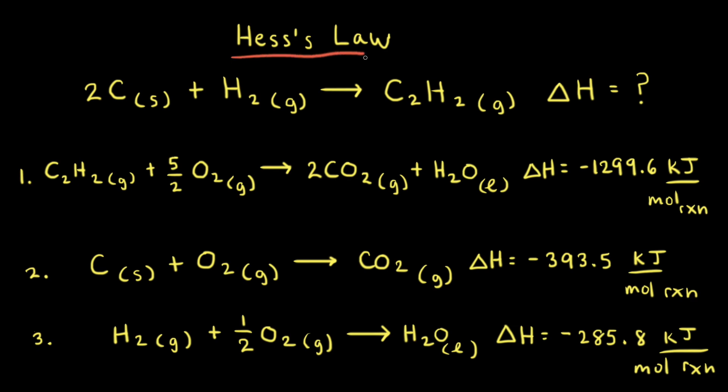Hess's law states that the overall change in enthalpy for a chemical reaction is equal to the sum of the enthalpy changes for each step. This is independent of the path taken, so it doesn't matter what set of reactions you use. If you add up those reactions and they equal the reaction you're trying to find, you can also sum the enthalpies to find the enthalpy change for the reaction.